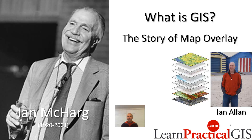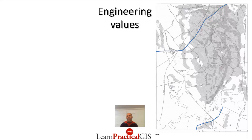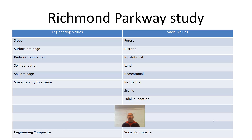Let's look at the Richmond Parkway study. There were two roadways in Richmond, New York — shaded blue here in the north and in the south — and planners and engineers wanted to join them. The route they proposed created community uproar because it went through parkland, forests, and recreational areas that the community really valued. So Ian McHarg was brought in to resolve this issue, and he ended up creating a series of maps dealing with both the concerns of the engineers and the concerns of the community, brought together at the same scale so they could be overlaid.